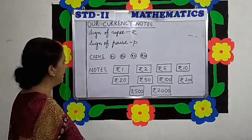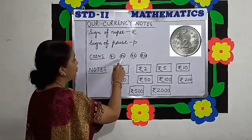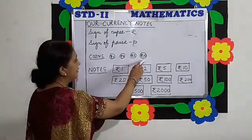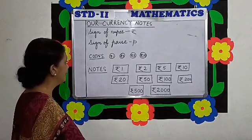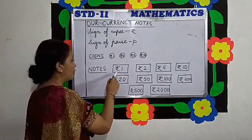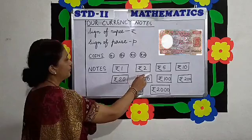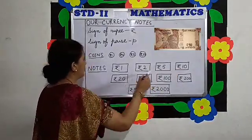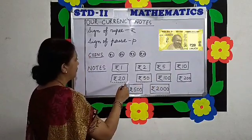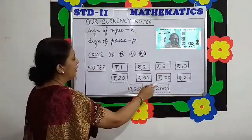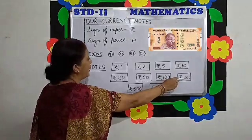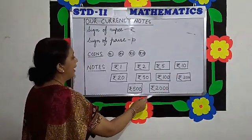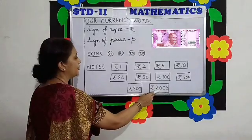In India, we have 1 rupee coin, 2 rupee coin, 5 rupee coin, and 10 rupee coin. We also have 20 rupee coin, 50 rupee coin, 100 rupee coin, 200 rupee coin, 500 rupee coin, and 2000 rupee note.